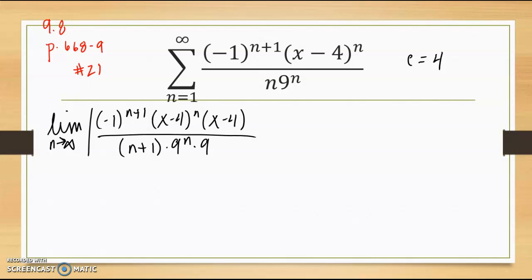So I use those exponent rules, 9 to the n divided by x minus 4 to the n. Now I get this to cancel, I get these to cancel.